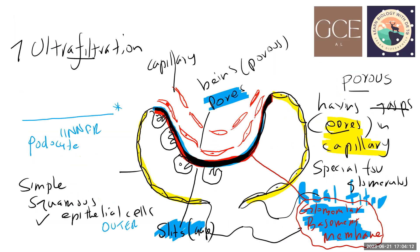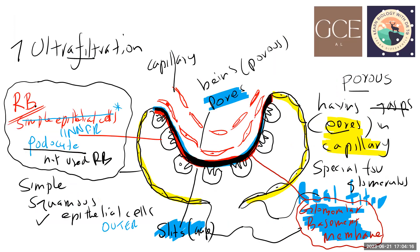Ultrafiltration takes place in the glomerulus due to the pressure in the blood. The afferent arteriole and efferent arteriole create pressure so fluid can escape from the pores of the capillary. The capillaries of the glomerulus are special — they have more openings called pores, so we call them porous. The glomerular basement membrane is the real filter, and only small molecules can pass through it.